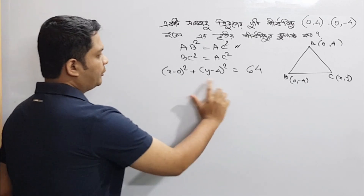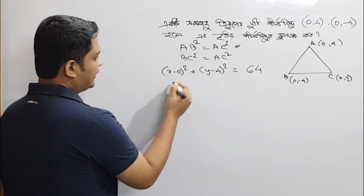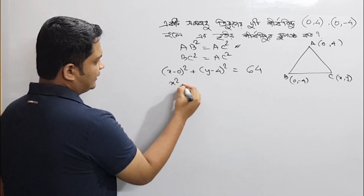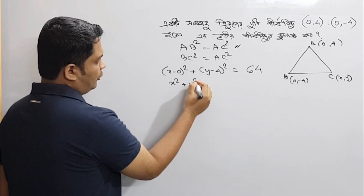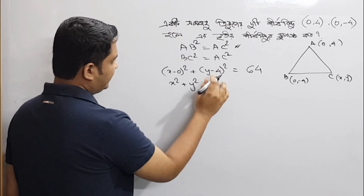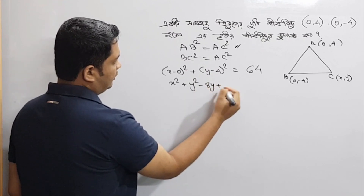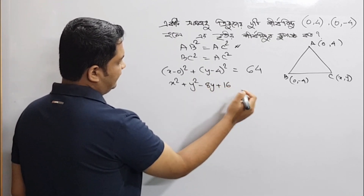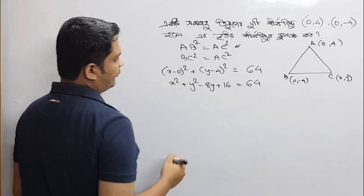So we can see x squared plus y squared, minus 8y, plus 16, is equal to 64.